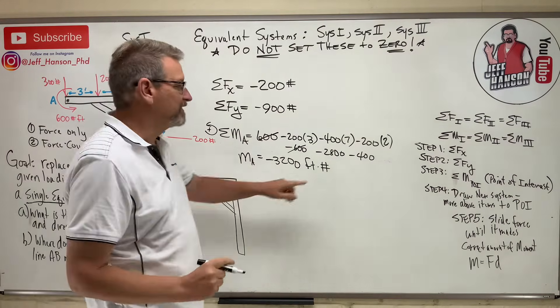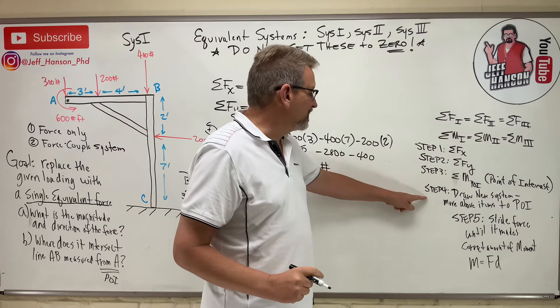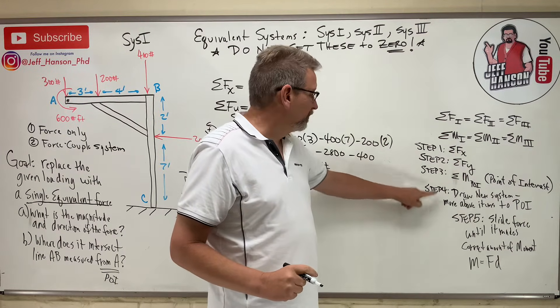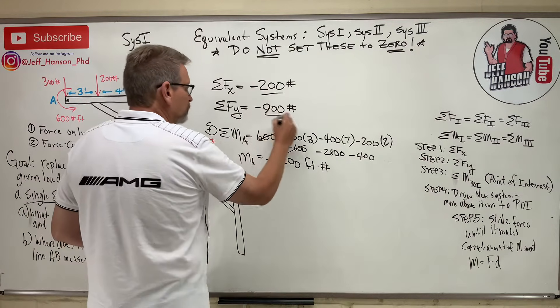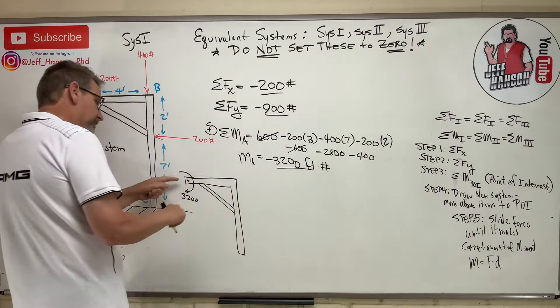What does the negative right there mean? It means that that is a clockwise moment. So, I have this. 3200. Because the next step, right? What's the next step? Draw the new system and move the items above, which are these three things here, to the point of interest. So, I'm moving these three things to this point of interest.